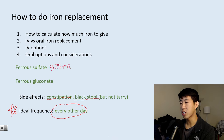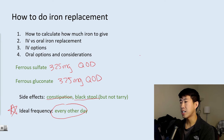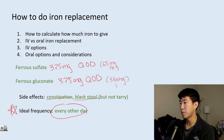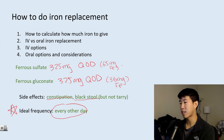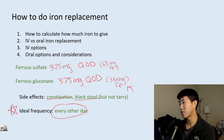The standard dosing for both ferrous sulfate and ferrous gluconate is 325 mg every other day. Ferrous sulfate contains 65 milligrams of elemental iron, while ferrous gluconate contains 36 milligrams of elemental iron, so ferrous sulfate replaces stores a bit faster. However, if a patient is experiencing constipation or GI side effects, there is evidence that ferrous gluconate with its lower elemental iron content reduces those side effects.